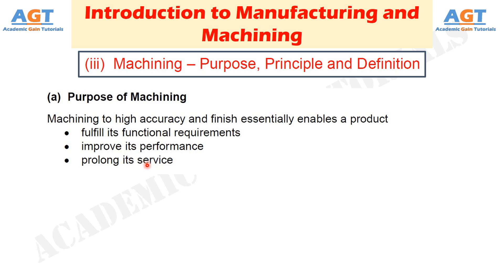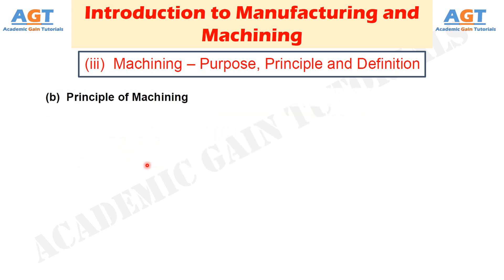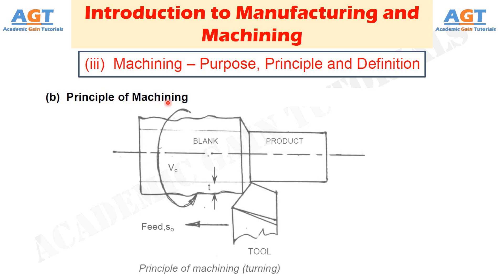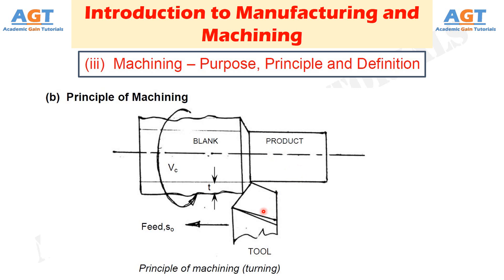Then comes the principle of machining. The basic principle of machining is typically illustrated in this figure showing the principle of machining in a turning process in a lathe machine. A metal rod of irregular shape, size, and surface is converted into a finished rod of desired dimension and surface by machining, through proper relative motions of the tool-work pair.